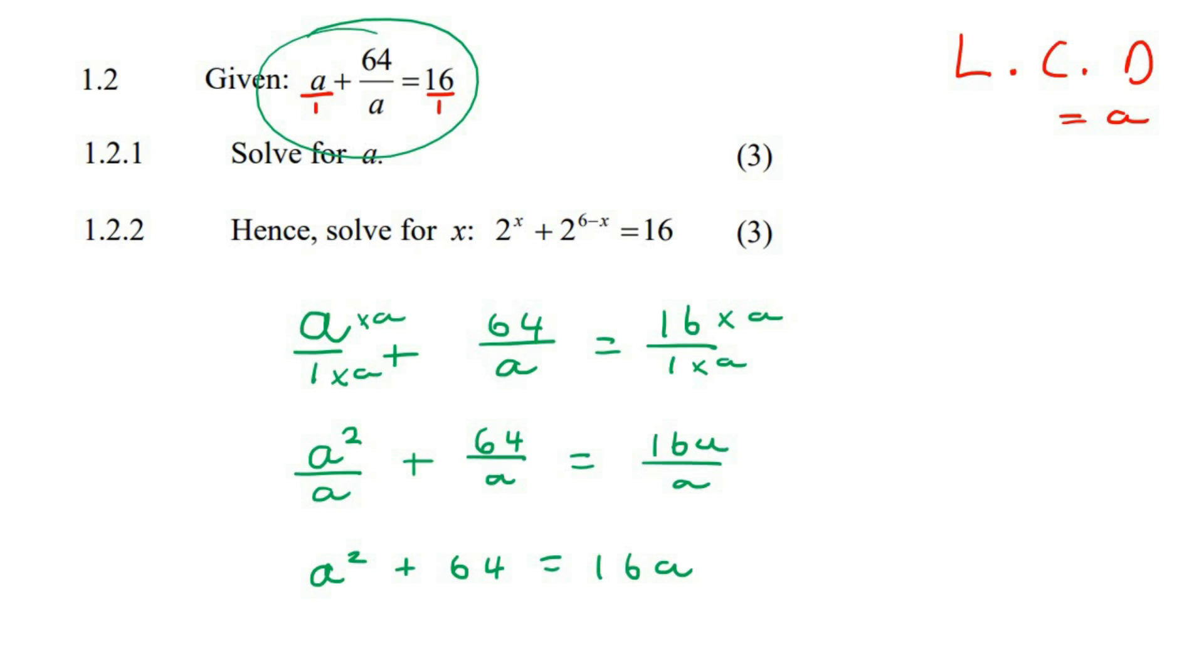Now we can just solve this like a trinomial by just bringing the 16A over to the other side. So we end up with A squared minus 16A plus 64 equals 0. Now you can either solve this with a quadratic formula, or you can solve this using factorizing. This one will factorize quite nicely as A minus 8 and another A minus 8. You can just pause maybe and check that you agree with me on that. But A times A is A squared, and then negative 8A, negative 8A plus 64. So that works out perfectly. Then we can just solve, and we'd see that A minus 8 is 0. Therefore, A would be equal to 8.